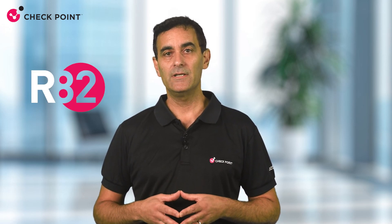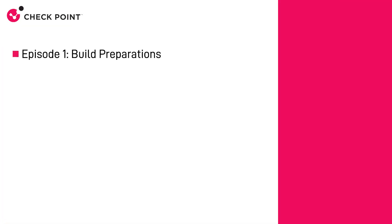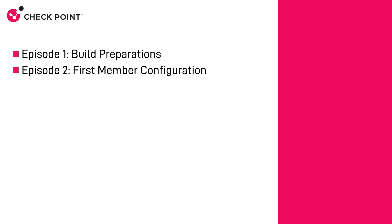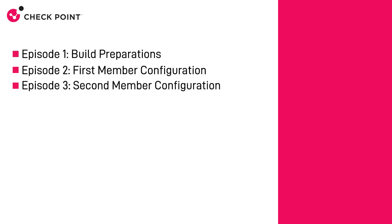This brings us to the end of the introduction to the Elastic Excel feature of the Checkpoint new R82 software release. Please join us for the rest of the series, where we will dive deeper into the nuts and bolts of Elastic Excel configuration and operation. The first episode of the series will cover the Elastic Excel build preparation. The second episode will show the process of the first member, the single management object creation and configuration. In the third episode, we will add the second member, which is actually any member added after the SMO is set up.